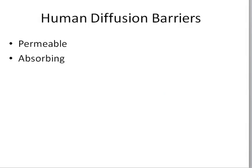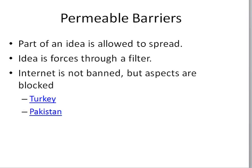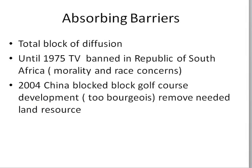Diffusion doesn't always happen — sometimes there are barriers. There are two types: permeable and absorbing. A permeable barrier lets part of the idea through, like a filter. Turkey and Pakistan have both had times where they banned some of the Internet, but not all — that's a permeable barrier. An absorbing barrier completely blocks diffusion. For example, China blocked golf courses because they were too bourgeois and removed needed land resources. The Taliban blocked Internet and television for years so it would not negatively impact culture.